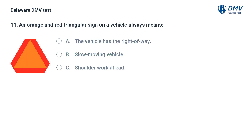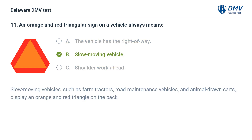An orange and red triangular sign on a vehicle always means: A. The vehicle has the right of way. B. Slow moving vehicle. C. Shoulder work ahead. Answer: B. Slow moving vehicle. Slow moving vehicles such as farm tractors, road maintenance vehicles, and animal-drawn carts display an orange and red triangle on the back.